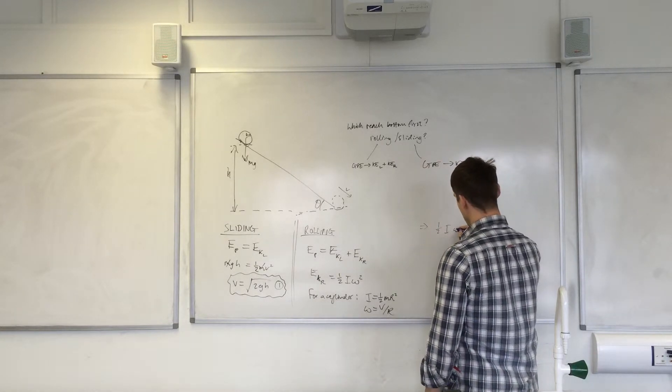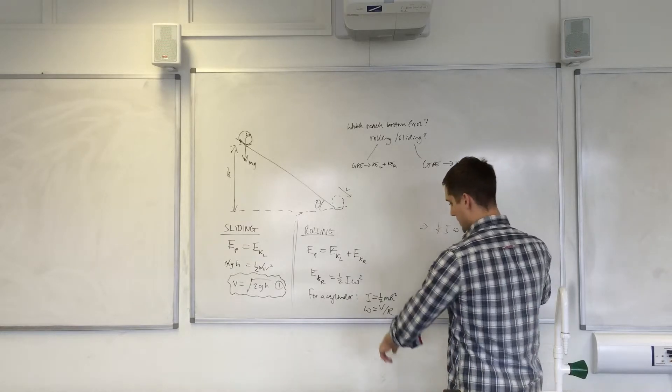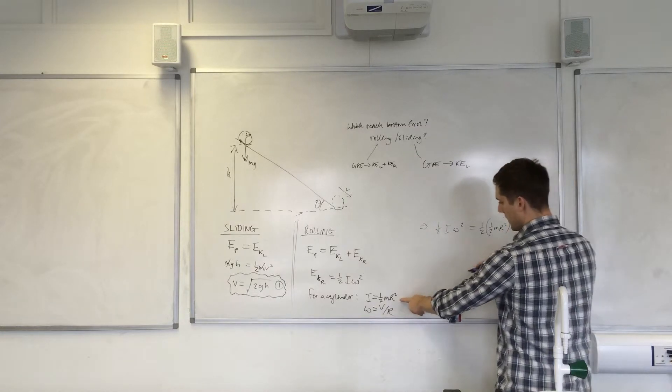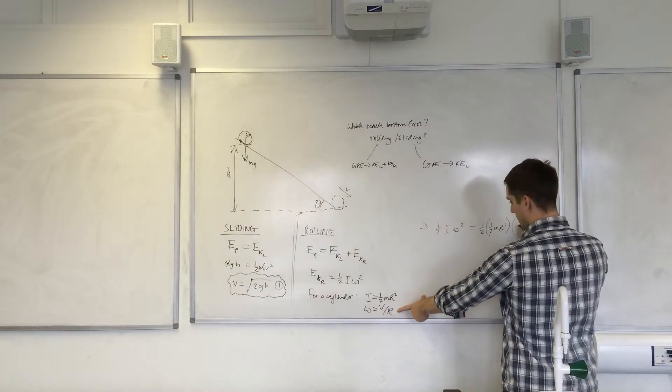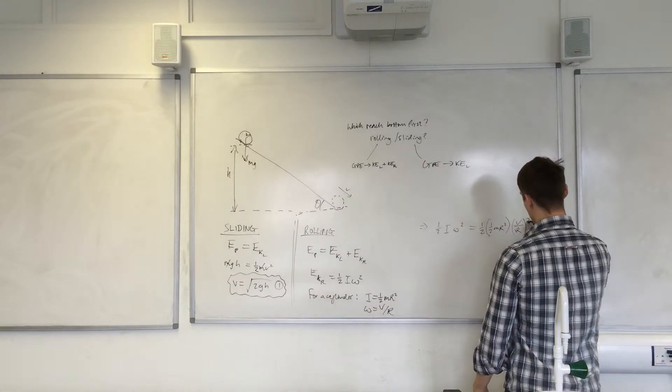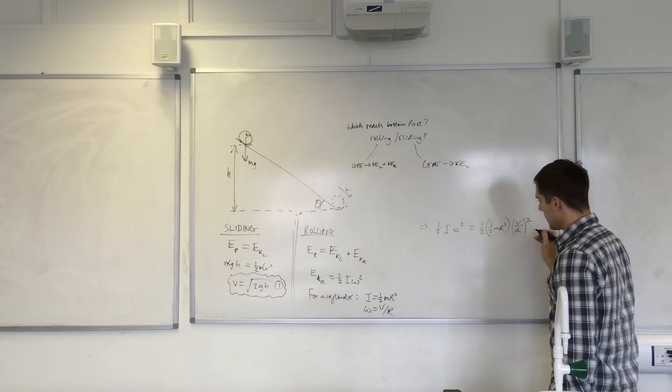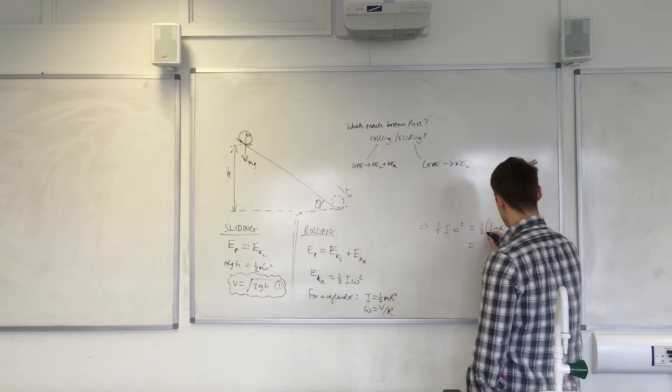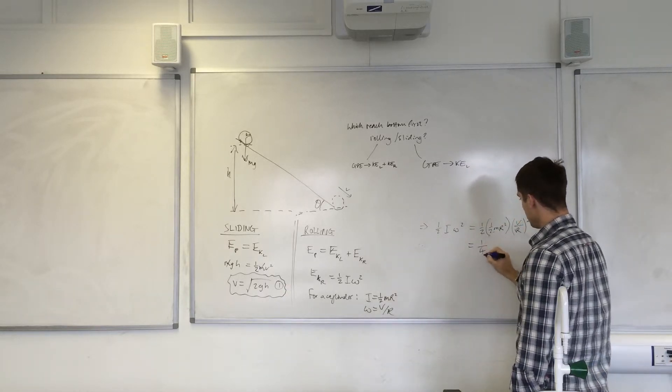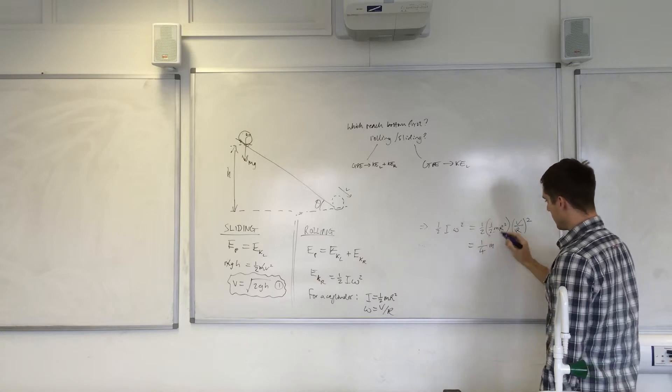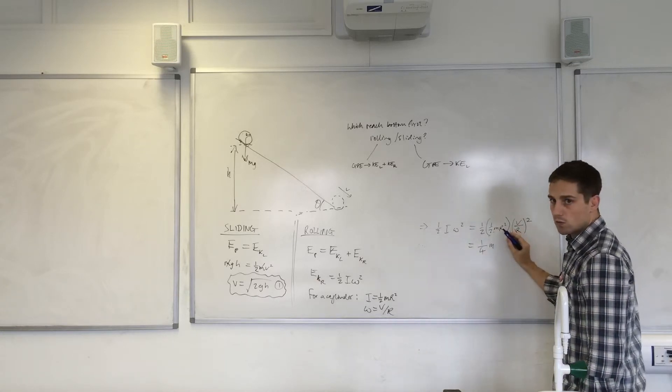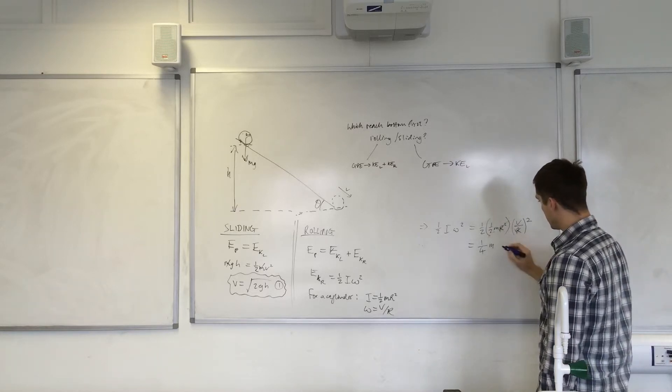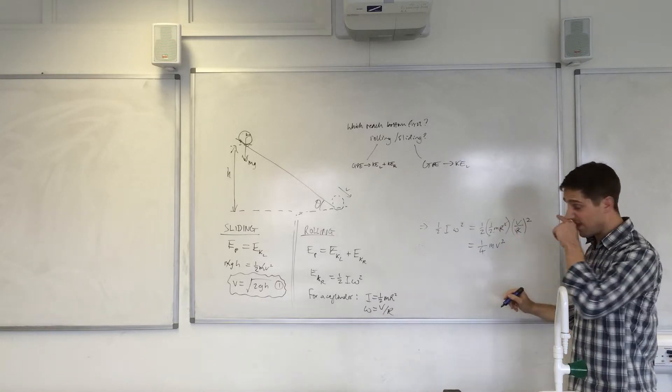So up here, half I omega squared is equal to half times half mr squared—that's that one there—and this one's v over r, and this one's v over r all squared because the omega is squared there. Let's just write it as an equals here. A half times a half gives us a quarter. We've got the mass—we can't get rid of that. This is an r squared; this is also an r squared, so those will cancel out, and we're left with v squared—a quarter mv squared.